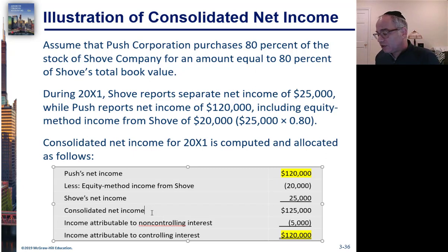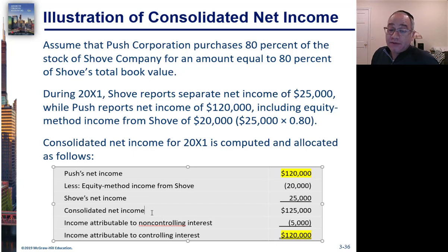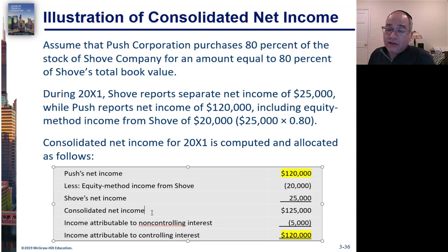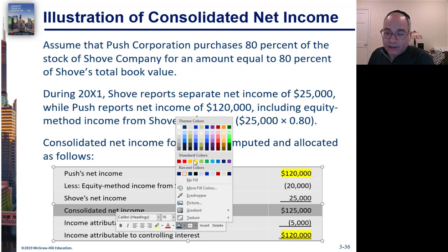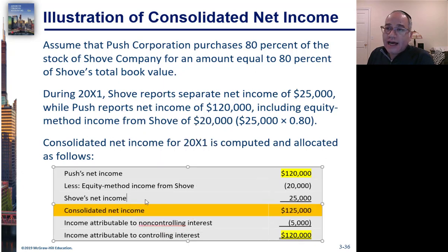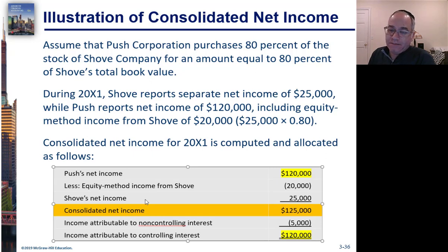What we do is take the parent's total net income — the parent is using the equity method, so it recorded only its share of the sub's income, not all of it. We take that equity method income back out again and add in the sub's total net income, in order to arrive at consolidated net income. That's the bottom line — that's what we really want to see. Then we subtract income attributable to the non-controlling interest to get the parent's share of consolidated net income.